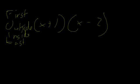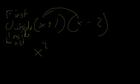First, we multiply the first terms of each bracket — that's x and x — and we know x times x equals x². Then we do the Outside terms: that's the x from the first bracket and the -2 from the second. It's negative two times x because it's a negative number, so we get -2x.